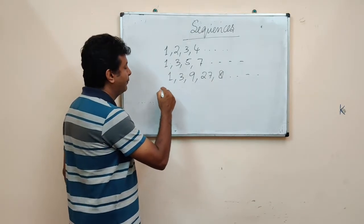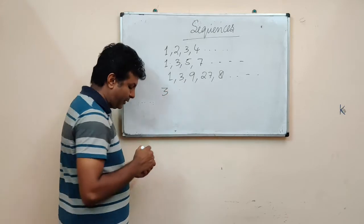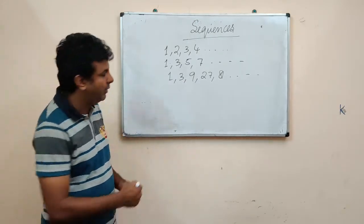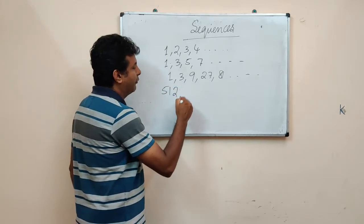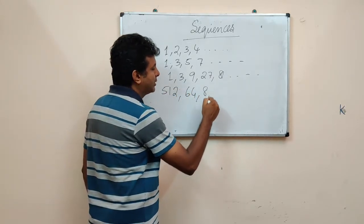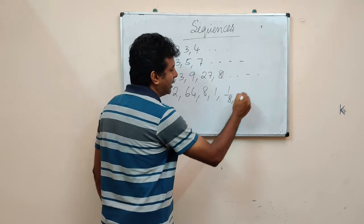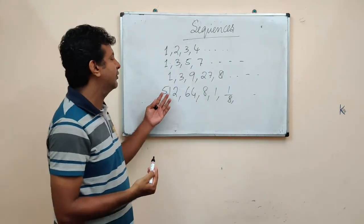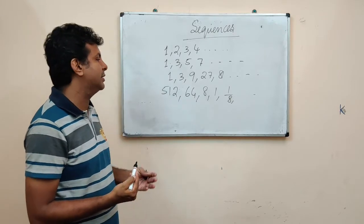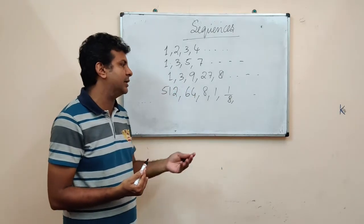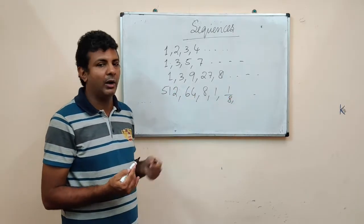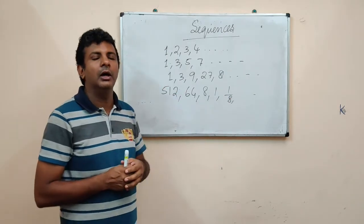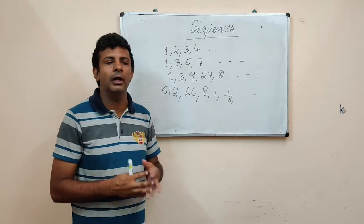It can be like 512, 64, 8, 1, 1/8, etc. In this case, it is a division: 512 divided by 8 is 64, 64 divided by 8 is 8, then 1 and then 1/8, etc. Any set of numbers that follow a certain pattern is called a sequence.